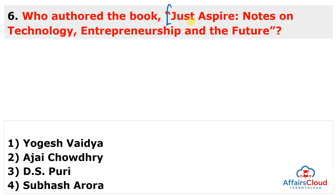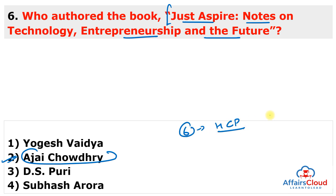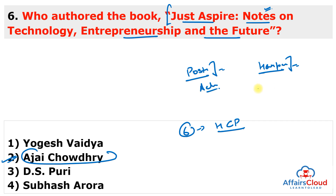Next question: Who authored the book 'Just Aspire: Notes on Technology, Entrepreneurship and the Future'? This book was authored by Ajay Chaudhary, one of the six founding members of Hindustan Computers Limited (HCL). The book is published by Harper Business, an imprint of HarperCollins. 'Just Aspire' is a motivational book focusing on the importance of a positive mindset, setting goals, and taking action. It talks about the journey of a small-town boy, Ajay Chaudhary, who became the CEO of a global company.